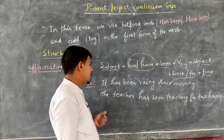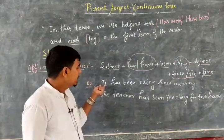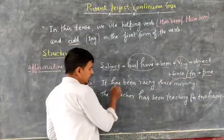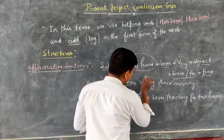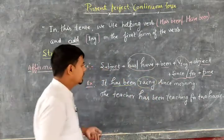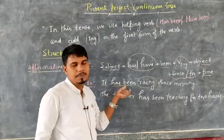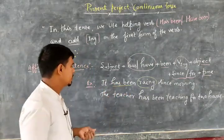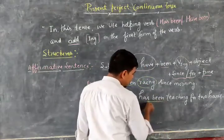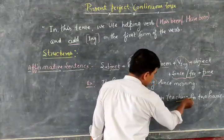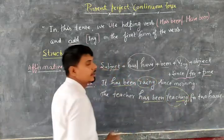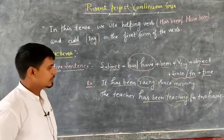You can see an example: 'It has been raining since morning.' Here you can see 'has been' plus the '-ing' form of the verb. Another example: 'The teacher has been teaching since morning.' So 'has been' plus 'teaching' — that is the '-ing' form of the verb — shows that this is the present perfect continuous tense.